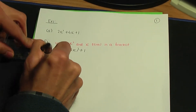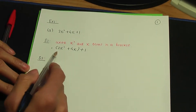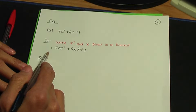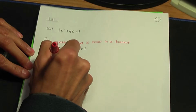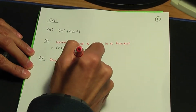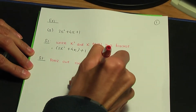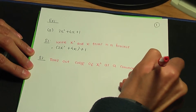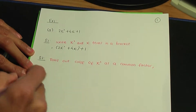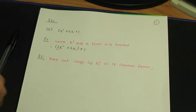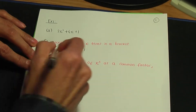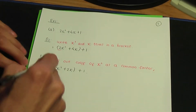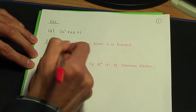Once you've done that, go to step number two. In step number two, you need to take out the number in front of x squared as a common factor — in other words, take out the coefficient of x squared as a common factor. In this case the coefficient of x squared is plus 2. So if I take out plus 2 as a common factor from the bracket, I'm left with x squared plus 2x in a bracket, plus 1 outside.